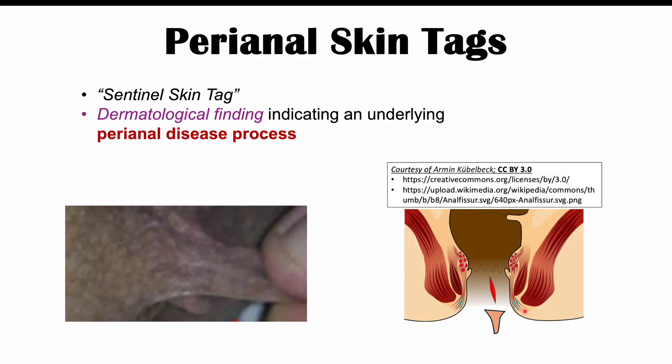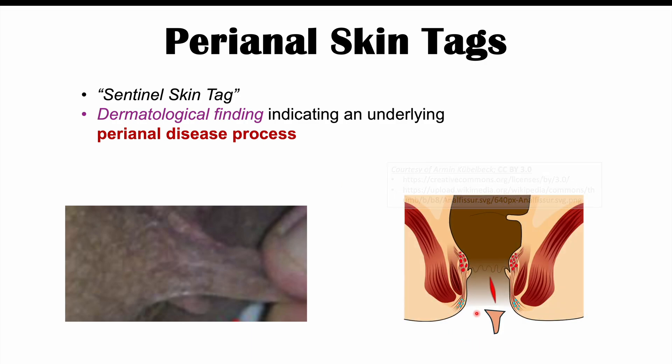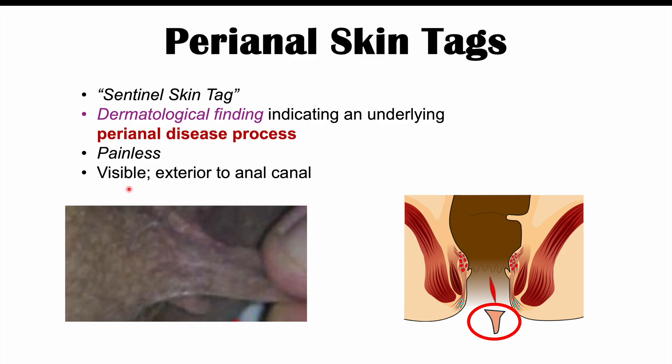Perianal skin tags occur as a loose piece of skin that hangs from the area around the anus. They're going to be painless and visible, exterior to the anal canal. These are findings that patients themselves could discover, and if they do, it could be an indication of one of the three conditions we're going to discuss in the upcoming slides.